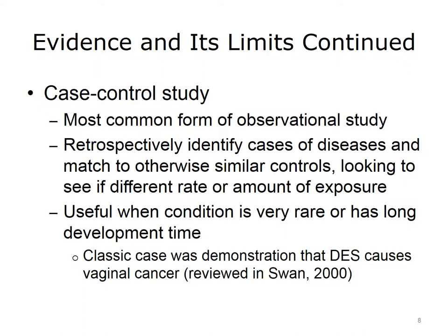A case control study is the most common form of observational study and the most common type done to assess harm. When we suspect something is harmful and want to find out quickly, we can't do a prospective study because it might take years. So we look retrospectively — we identify cases of the disease thought to be caused by the harmful agent, then match them to controls. We look at both groups to see if there's a different rate or amount of exposure. This type of study, for example, enabled us to see that there was not a higher rate of breast implant use in patients with lupus and rheumatoid arthritis. Case control studies can also be useful when the condition has a long development time — that's how it was determined that the drug DES, taken off the market in the 1950s, causes vaginal cancer in women.